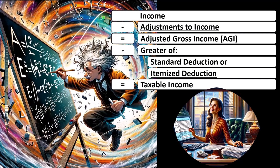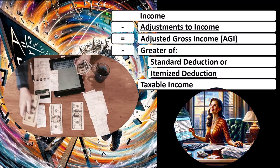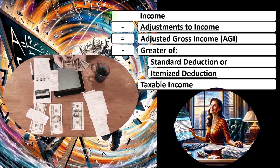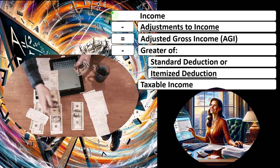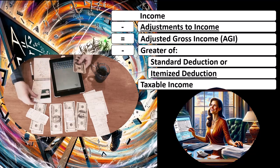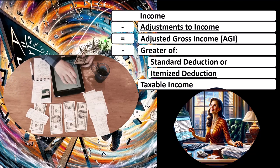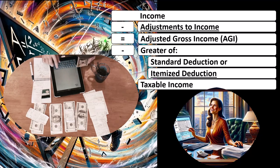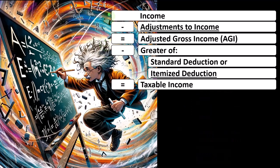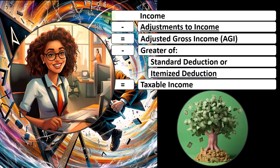If you have a person that had income of $100,000, but in order to generate that $100,000 they had to spend $60,000 — otherwise they wouldn't have generated the $100,000 — that would usually be a business expense, something you'd see on a Schedule C. Then it doesn't make sense to tax them on $100,000. It makes sense to tax them on $40,000, because they had to expend $60,000 in order to make the $100,000.